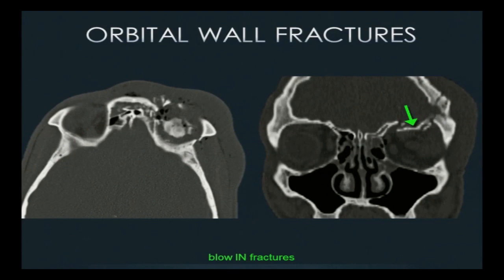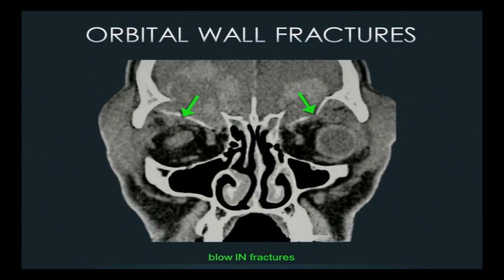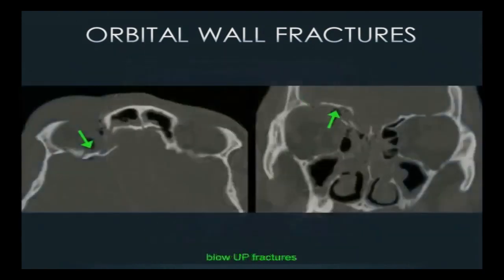Blow-in fractures come from frontal bone injuries propagating down, blowing the orbital roof into the orbit. These are associated with intracranial injuries — this case involved a soccer player whose head was struck by a foot, resulting in severe frontal contusions. Blow-up fractures drive the orbital roof — the floor of the anterior cranial fossa — intracranially, similarly breaching the dura. You've now exposed the CSF and meninges to the outside world, creating significant infection risk.